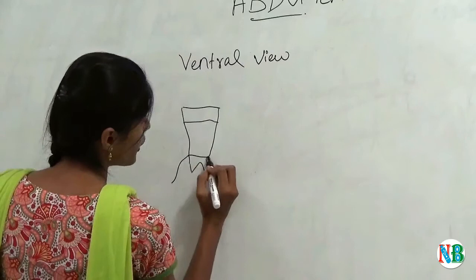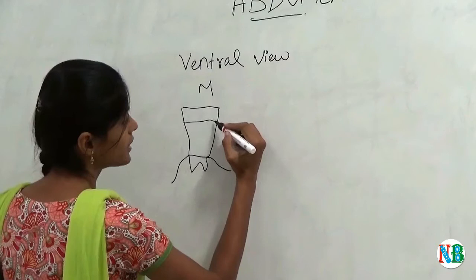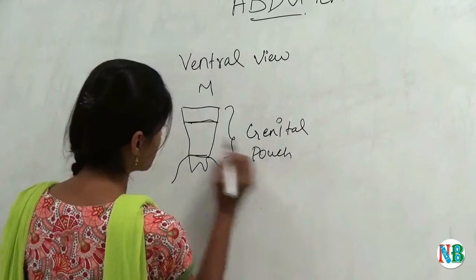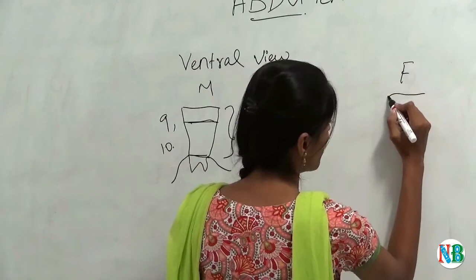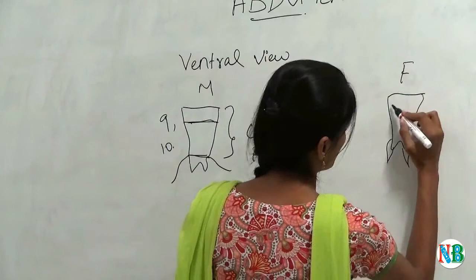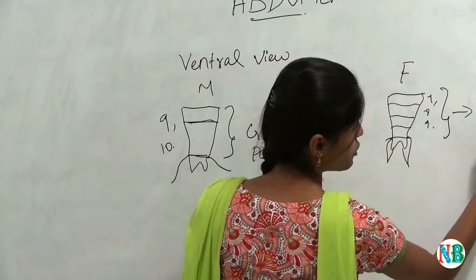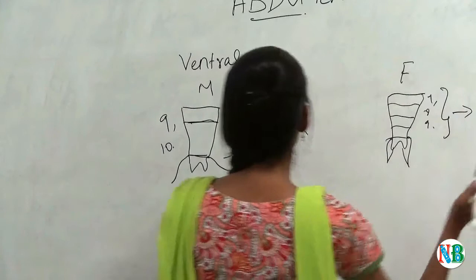Now we will see the ventral view. In male cockroach the genital pouch will be present. This is the 9th segment and this is the 10th segment. So the genital pouch will be present at the 9th and 10th segment. But in female the genital pouch will be present in segments 7, 8, and 9. This is the other difference that we can see in the ventral view.